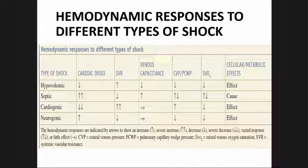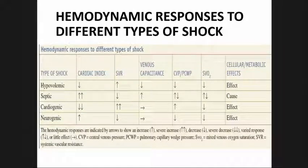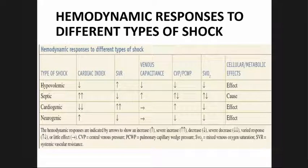Hemodynamic responses to different types of shock: in hypovolemic shock, there is decreased cardiac index with increased vascular resistance. In septic shock, there is an increase in cardiac index and decreased vascular resistance. In cardiogenic shock, there is severe decrease in cardiac index and severe increase in vascular resistance. In neurogenic shock, there is increased cardiac index and decreased vascular resistance.